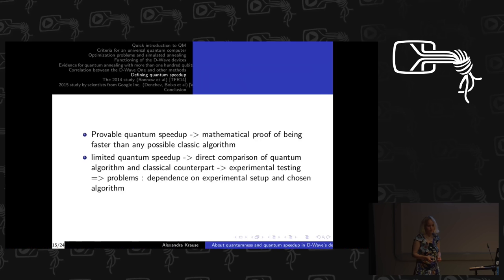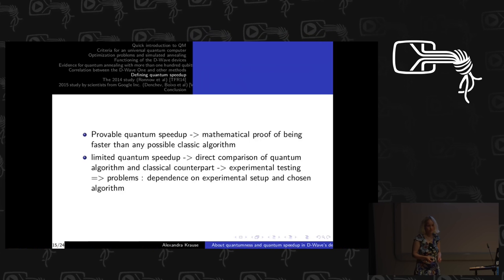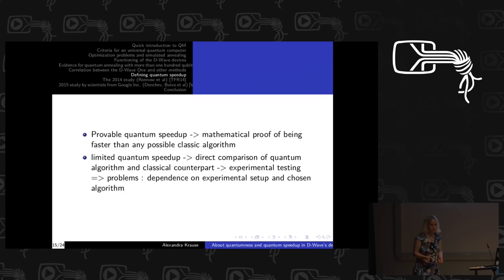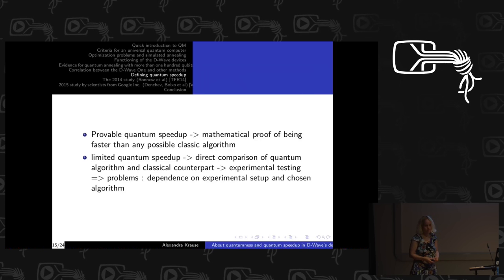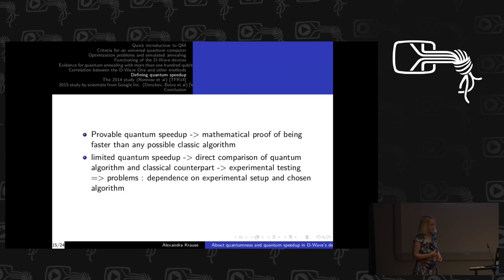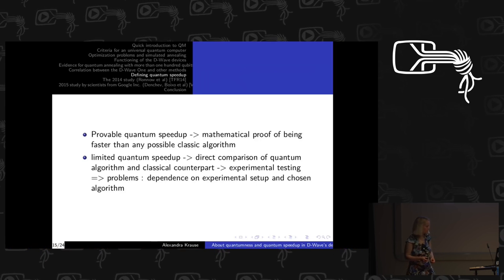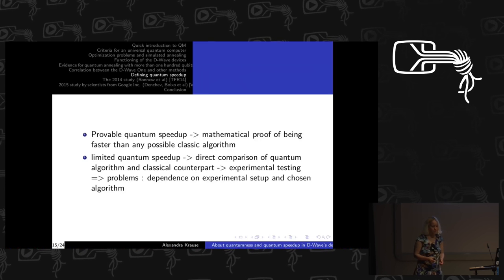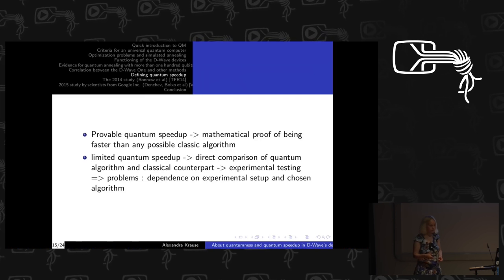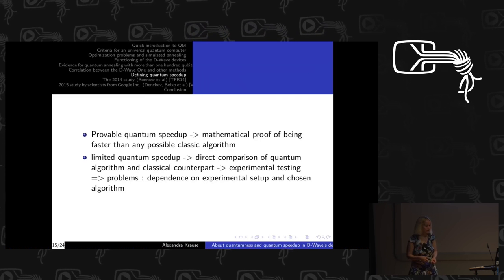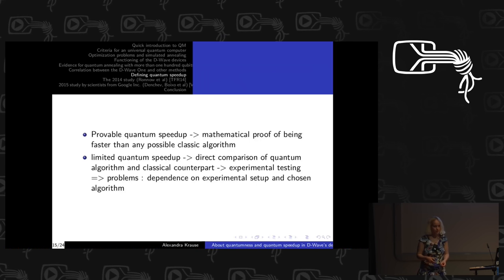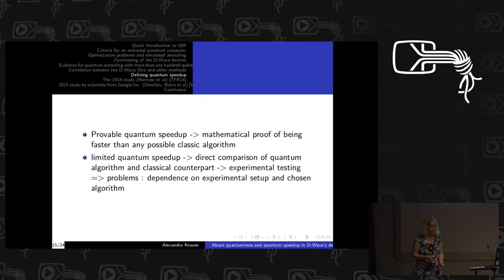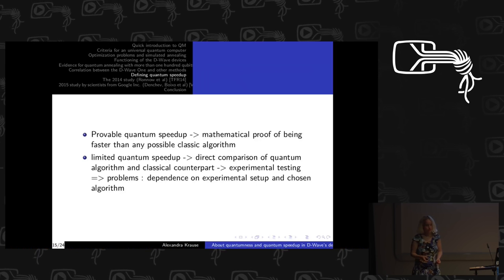At the moment, two algorithms are known for which provable quantum speedup holds. One is Shor's algorithm for prime factoring, which is the algorithm everybody talks about when quantum computers are said to break RSA encryption — it uses superposition and the quantum Fourier transformation. The other is Grover's search algorithm, which scales with the square root of the problem size and is much faster than any classical search algorithm, and could also be used to break symmetric encryption.